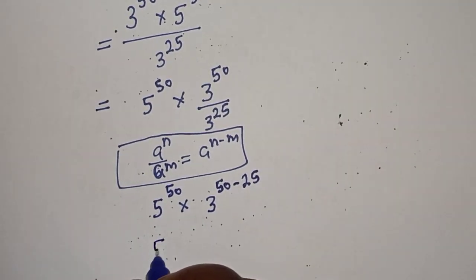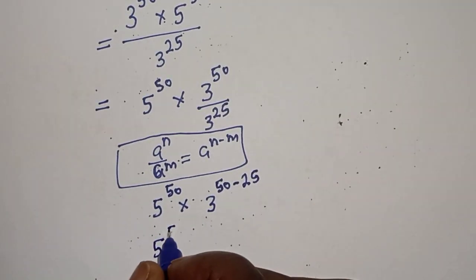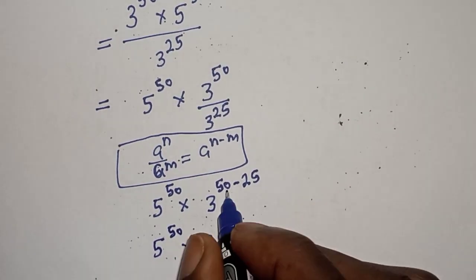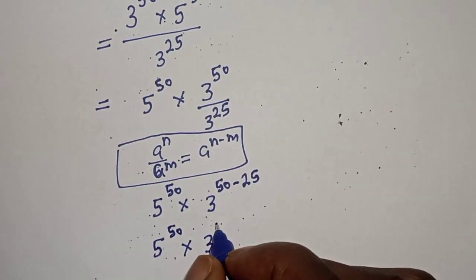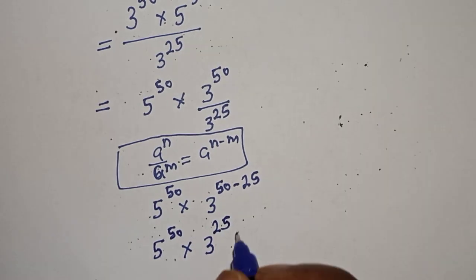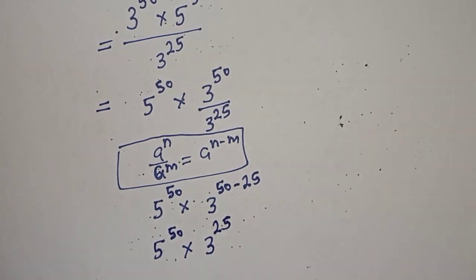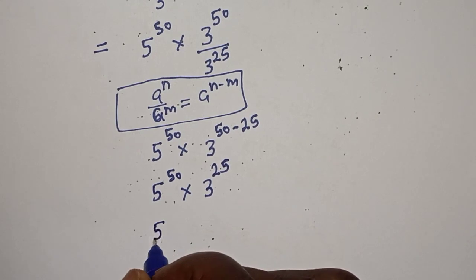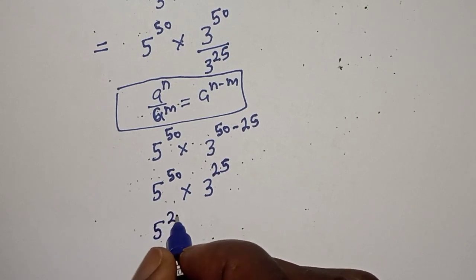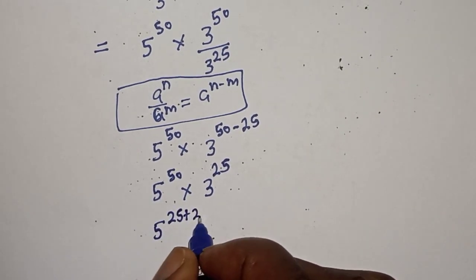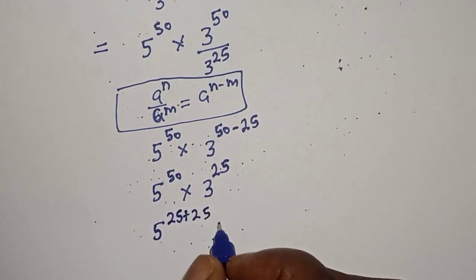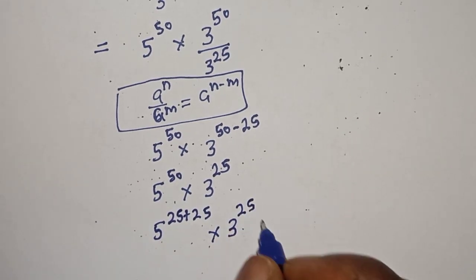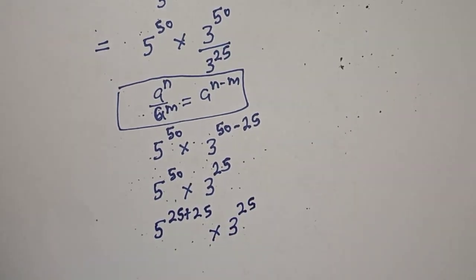This gives us 5 raised to power 50 multiplied by 3 raised to power 25. Note that 5 raised to power 50 can be written as 5 raised to power 25 plus 25, multiplied by 3 raised to power 25.